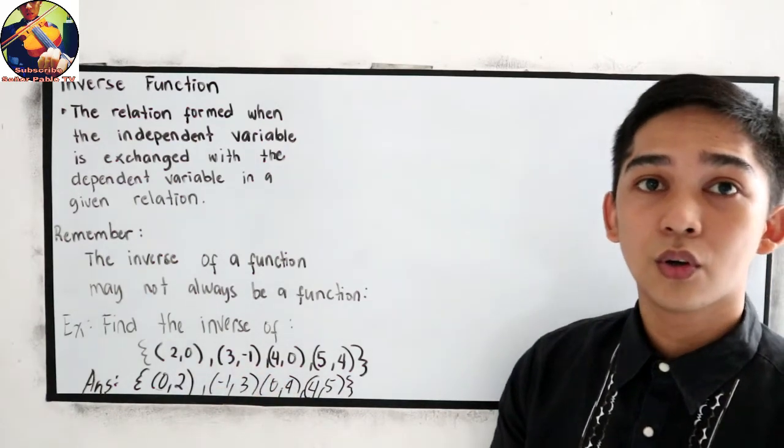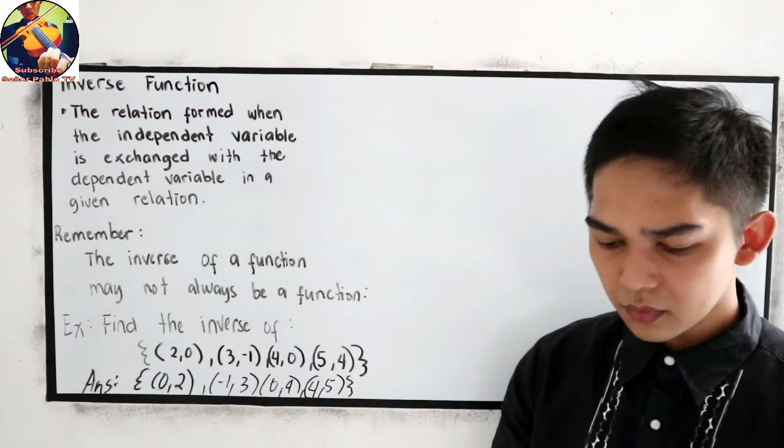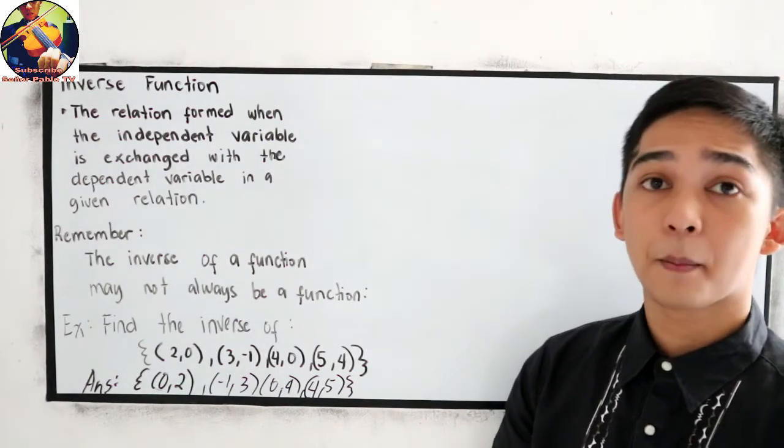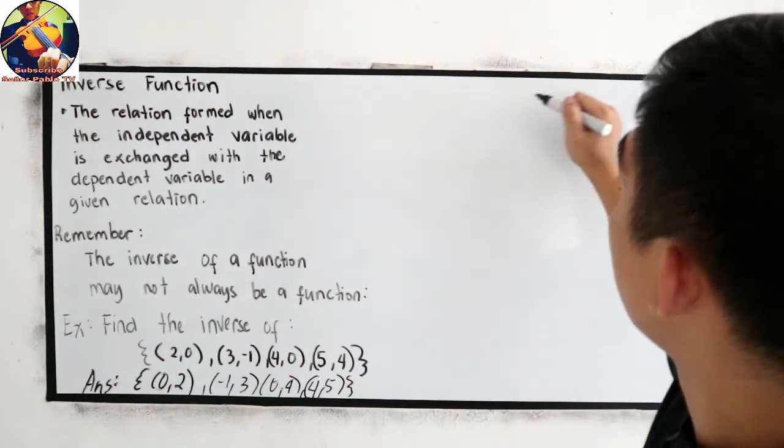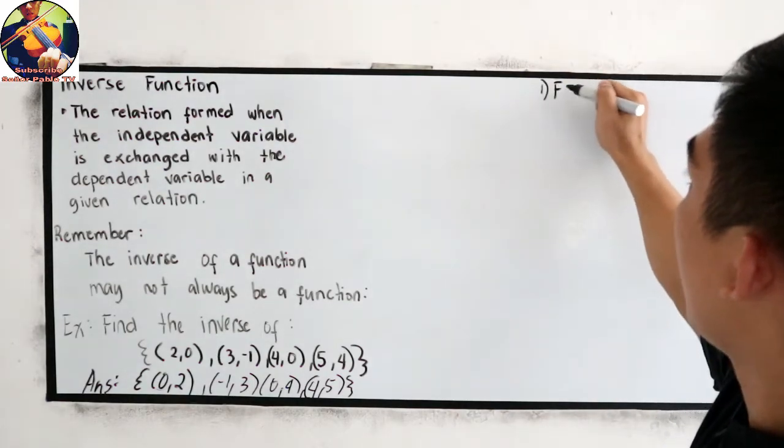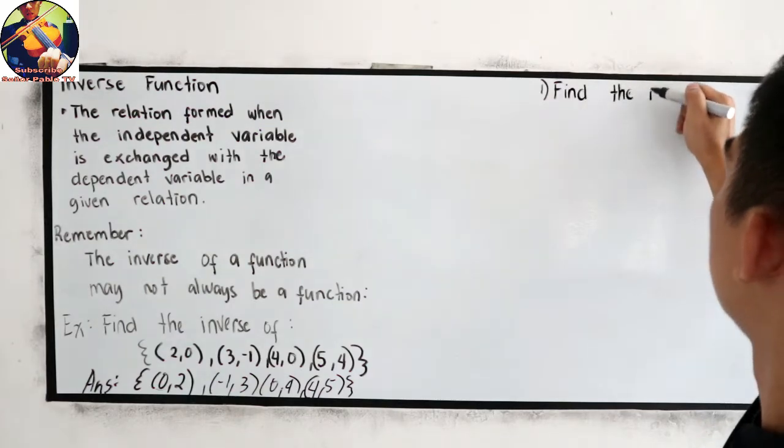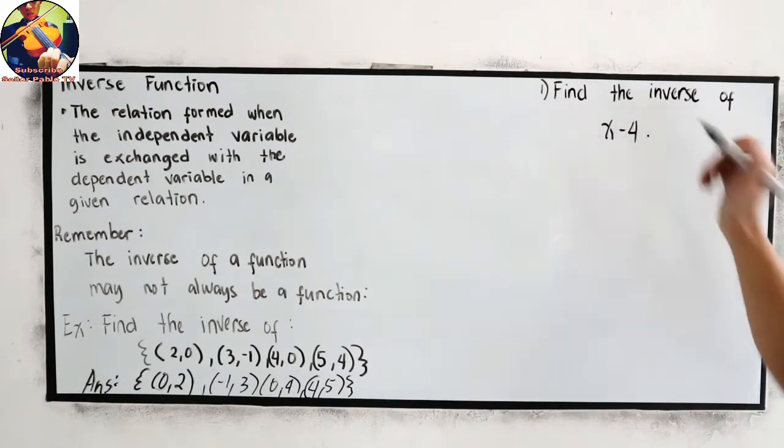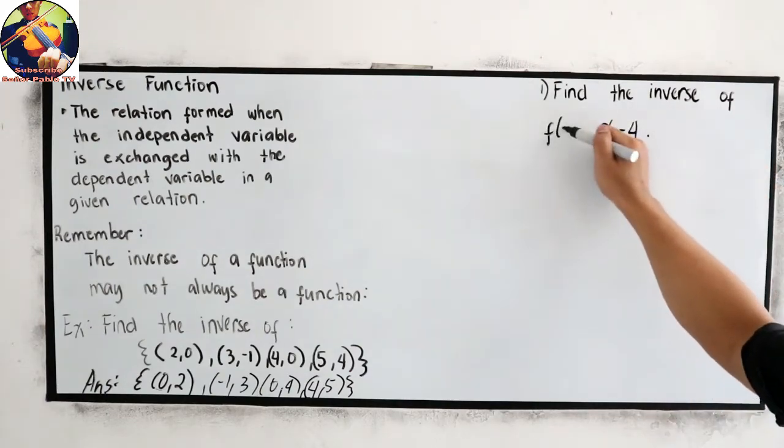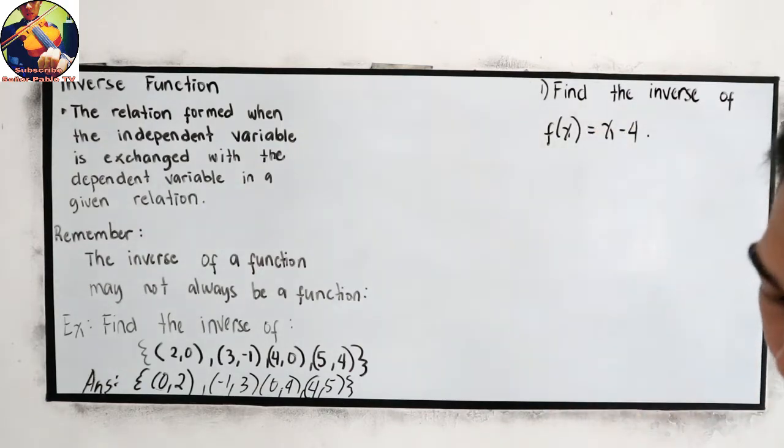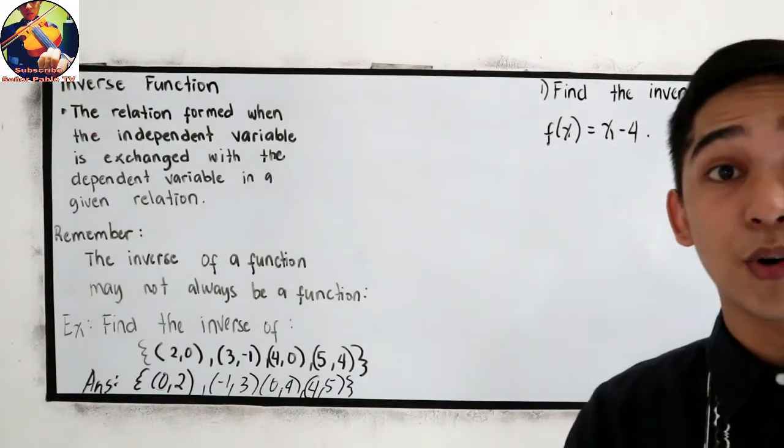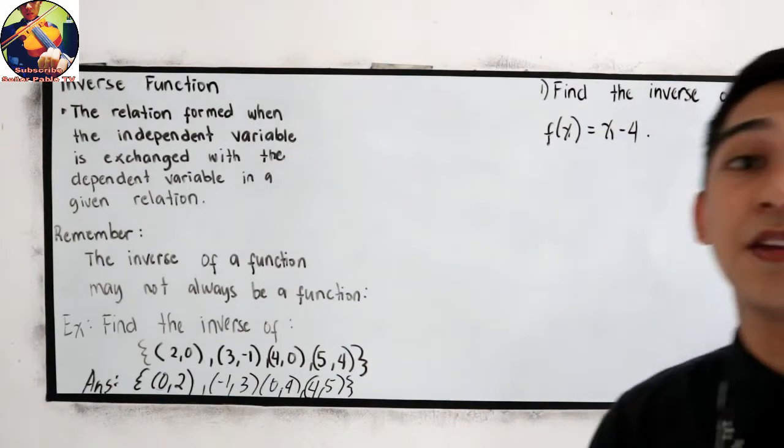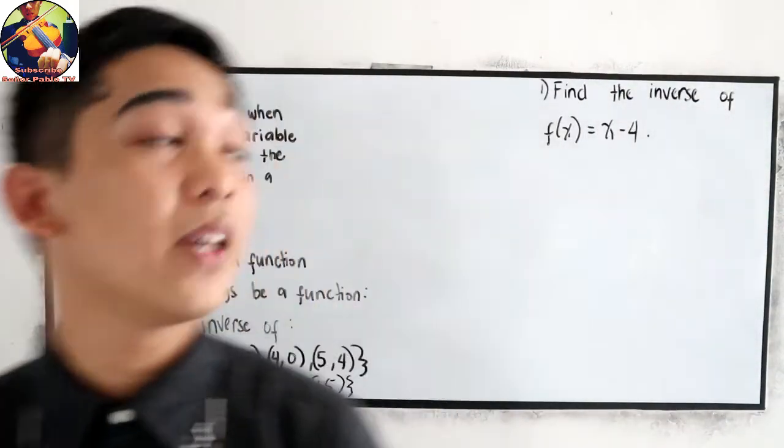So this is how to find the inverse of our coordinates. What if we have an equation? Let's say our example number one: find the inverse of f(x) = x - 4. So we have our four steps to find the inverse of a function if the given is an equation.